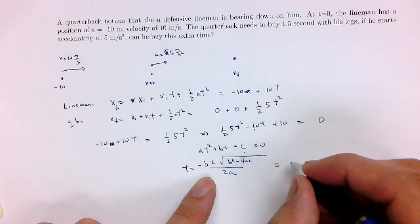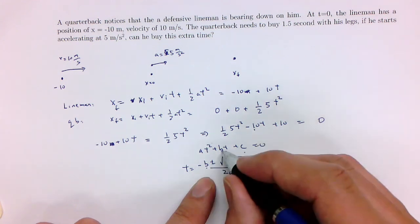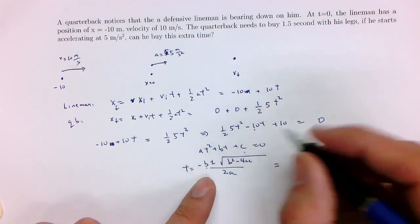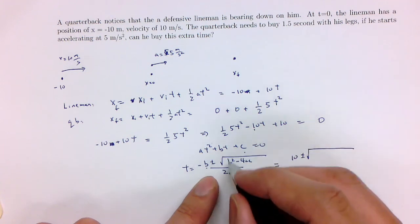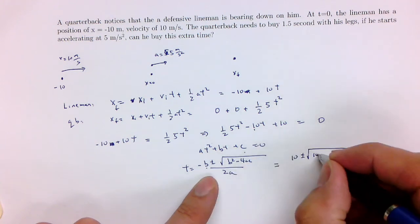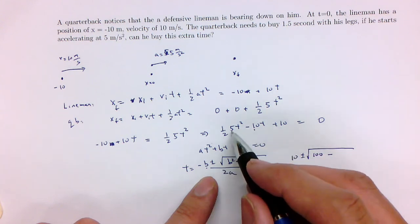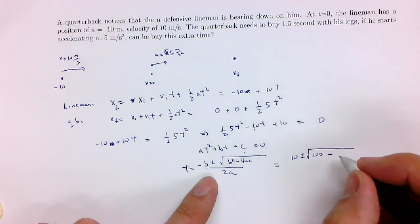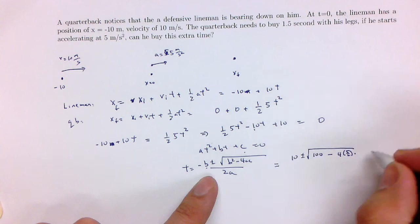The first part is going to be minus b. b is minus 10, so it's minus minus 10, which is 10. Plus or minus the square root of b squared, which is minus 10 squared, that's 100, minus 4ac. So 4 times 5 over 2 times c, which is 10.